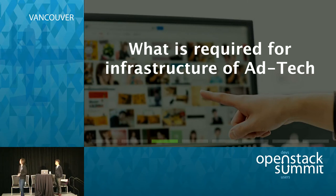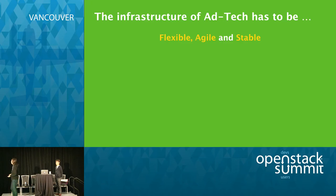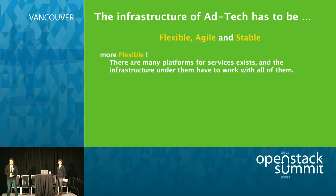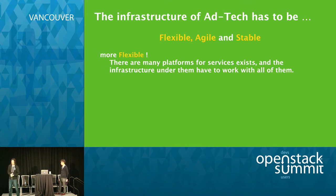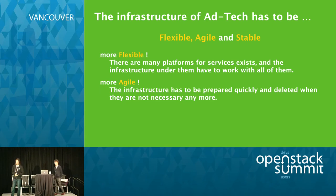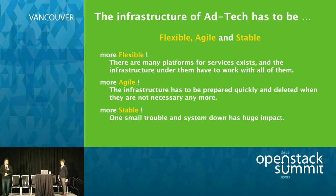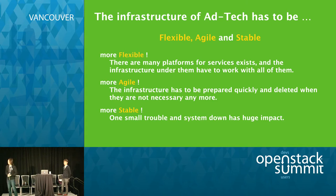What is required for infrastructure of ad technologies? The infrastructure of ad tech has to be flexible, agile, and stable. It has to be flexible because there are many platforms and services, and the infrastructure has to work with all of them. It has to be agile because infrastructure has to be prepared quickly and deleted when no longer necessary. It has to be stable because any trouble or system downtime has a huge impact, so a robust and redundant network topology with no single point of failure is mandatory.